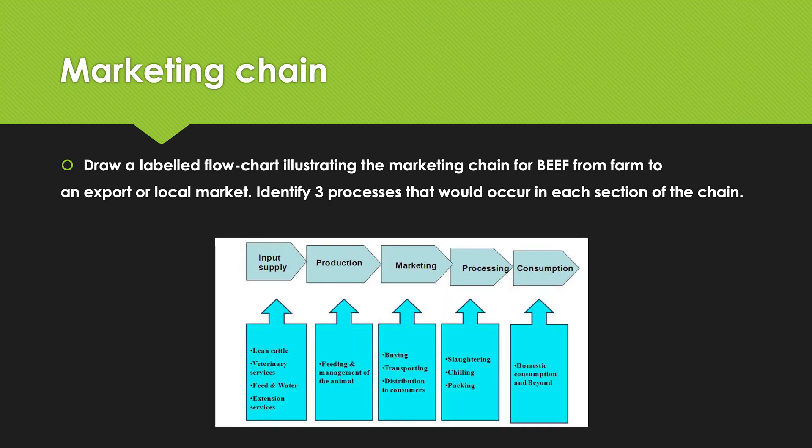Something like this would get you the marks — it's very simple but it does what it says. Input: lean cattle, vet services, feed and water, extension services. Production: feeding and management of the animals. Marketing: buying, transport and distribution. Processing: slaughtering, chilling and packing. Consumption: domestic consumption and beyond. This is a very simplified version. At the very least, commit that to memory as your go-to if you get asked anything about the marketing chain.